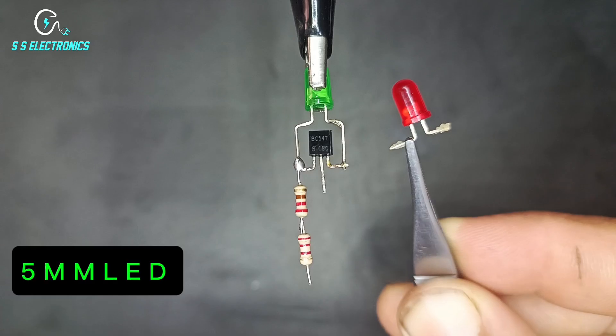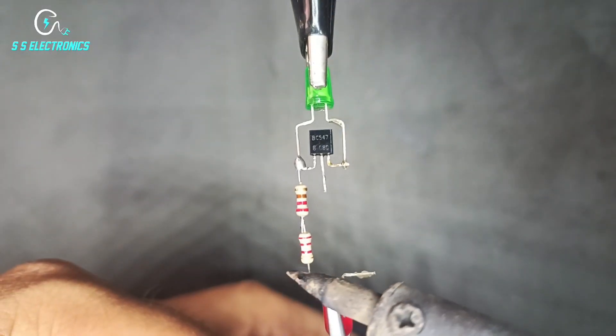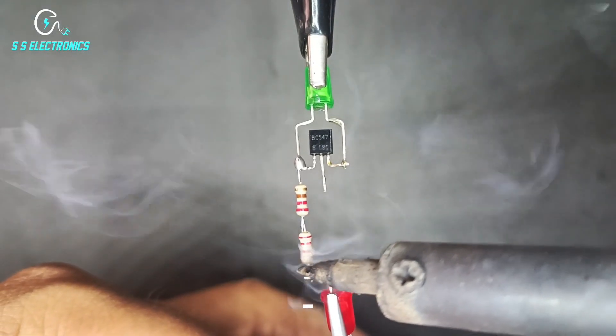5mm LED. LED negative side connecting with 2.2k resistance.